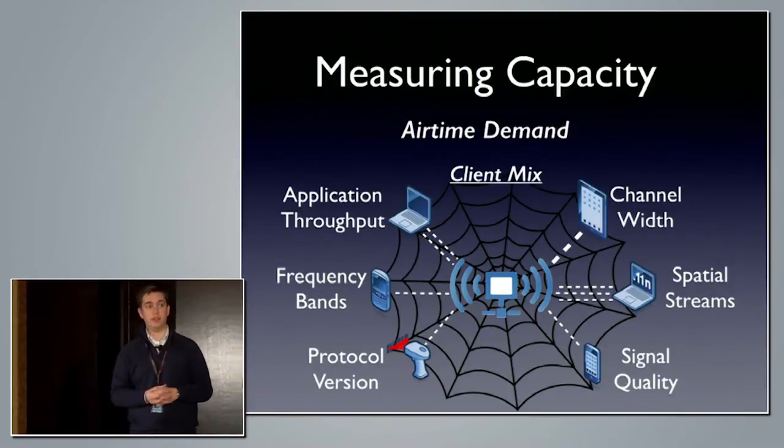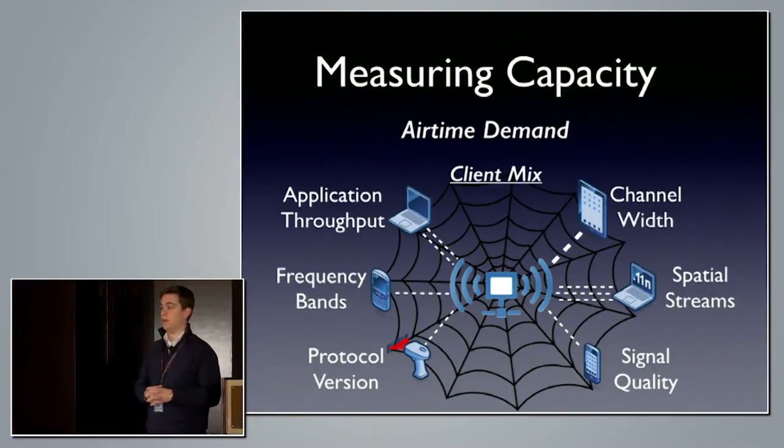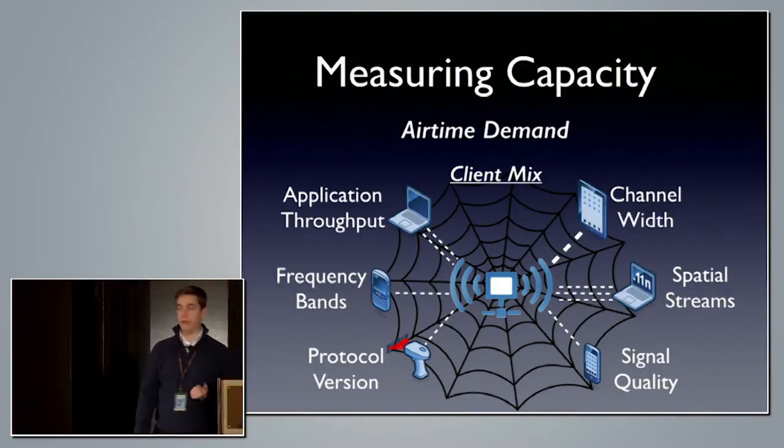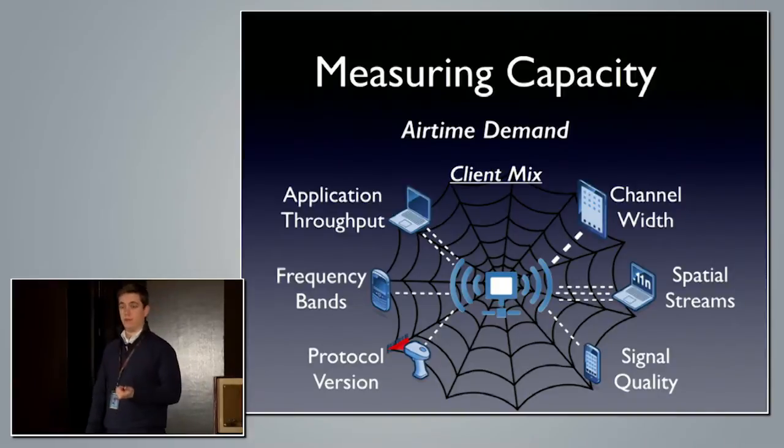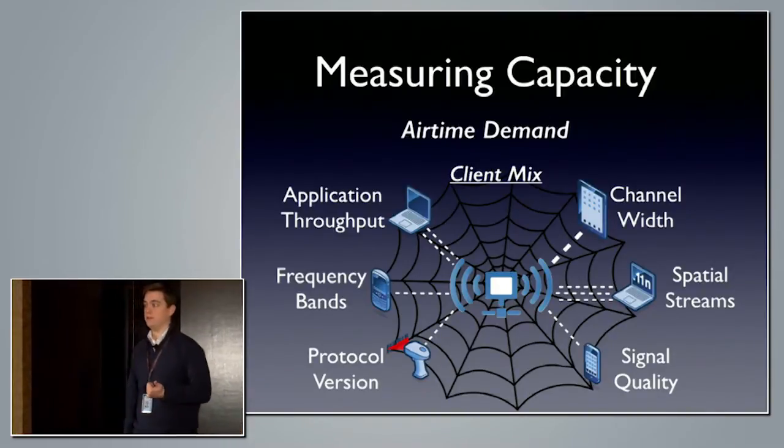Do your clients support DFS? Can they use those channels? Can you use them in your infrastructure? And the application throughput they are trying to achieve — are people doing email, voice over IP, large file transfers, streaming video? What they're trying to do on the network will determine how much airtime and how much they are trying to transmit or receive. What we want to do is boil this down from a very complex set of variables into something realistically achievable for most network admins to answer: how many APs do I need?